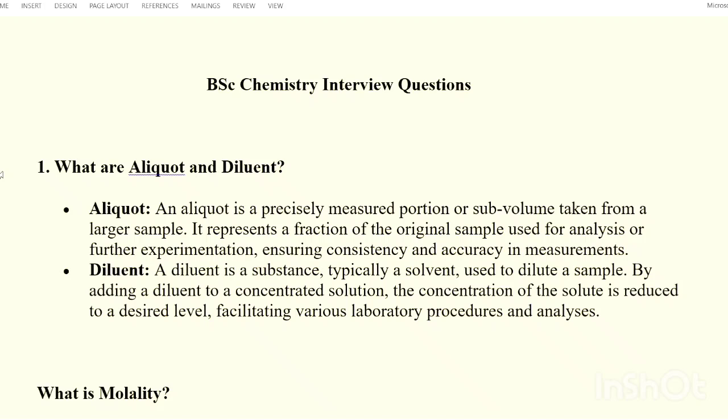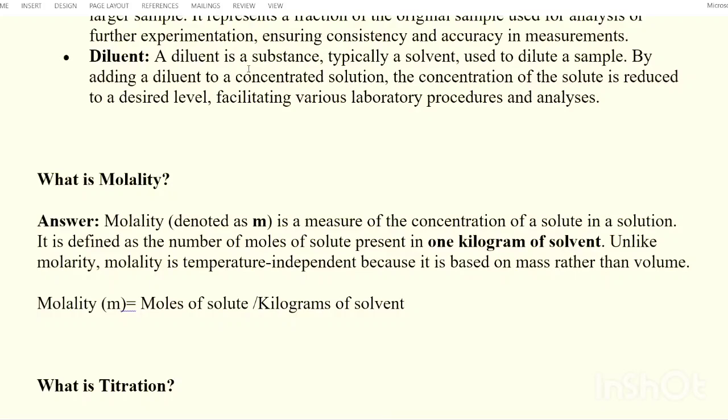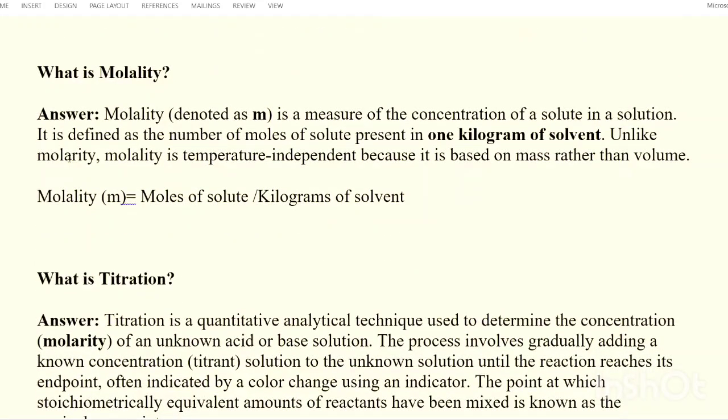Next, diluent. Diluents are added to dilute the sample to reduce the concentration. A diluent is a substance, typically a solvent, used to dilute a sample. By adding a diluent to a concentrated solution, the concentration of solute will get reduced to a desired level, facilitating laboratory procedures and analysis. You can ask in the comment section and I will try to explain more.